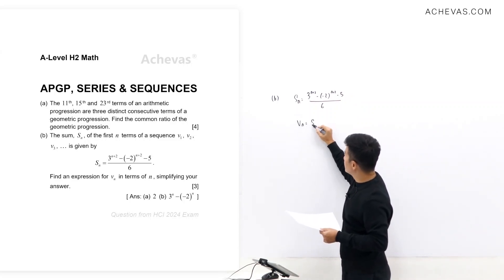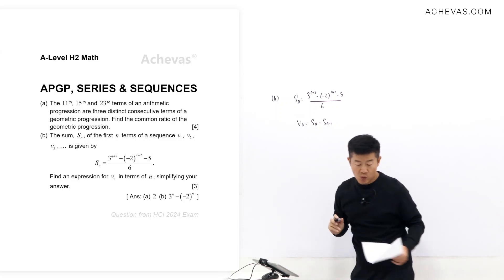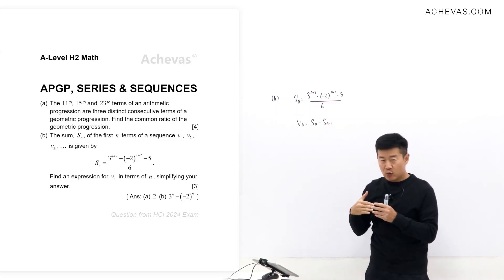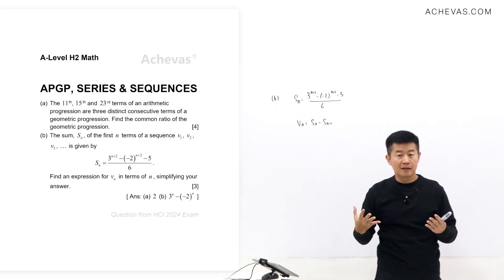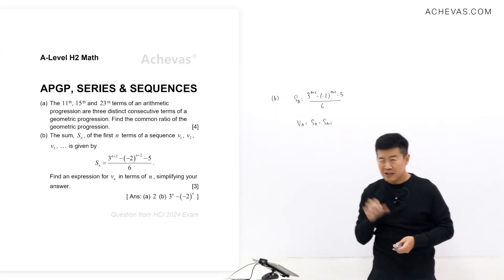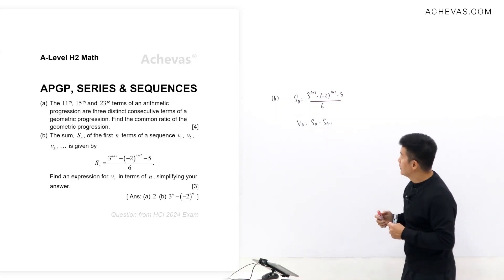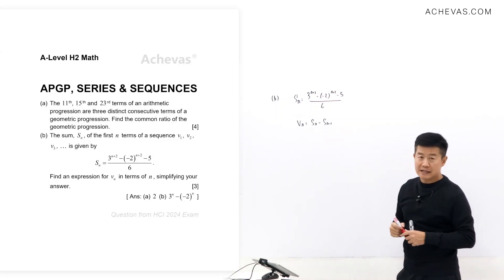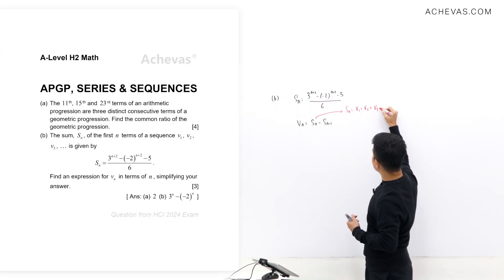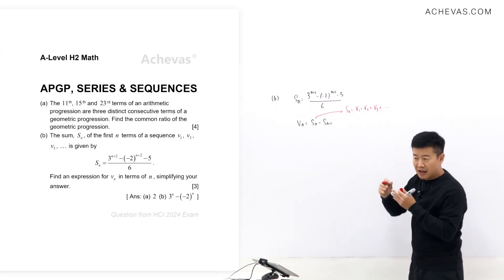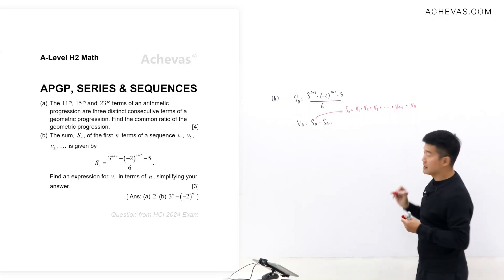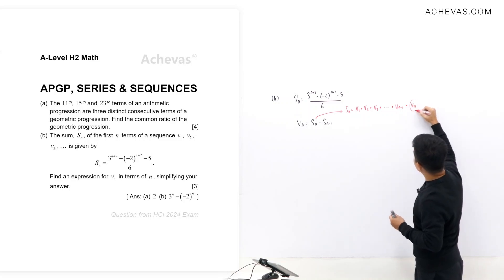V_n = S_n − S_(n-1). Some students memorize this without understanding why. By definition, S_n = V₁ + V₂ + … + V_(n-1) + V_n. So to isolate V_n, we simply subtract everything up to V_(n-1) — which is just S_(n-1) — from S_n.